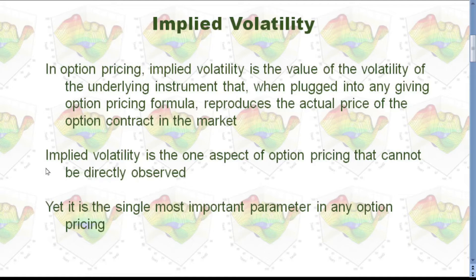Implied volatility is the one aspect of option pricing that cannot be directly observed. Yet, it is the single most important parameter in any option pricing.